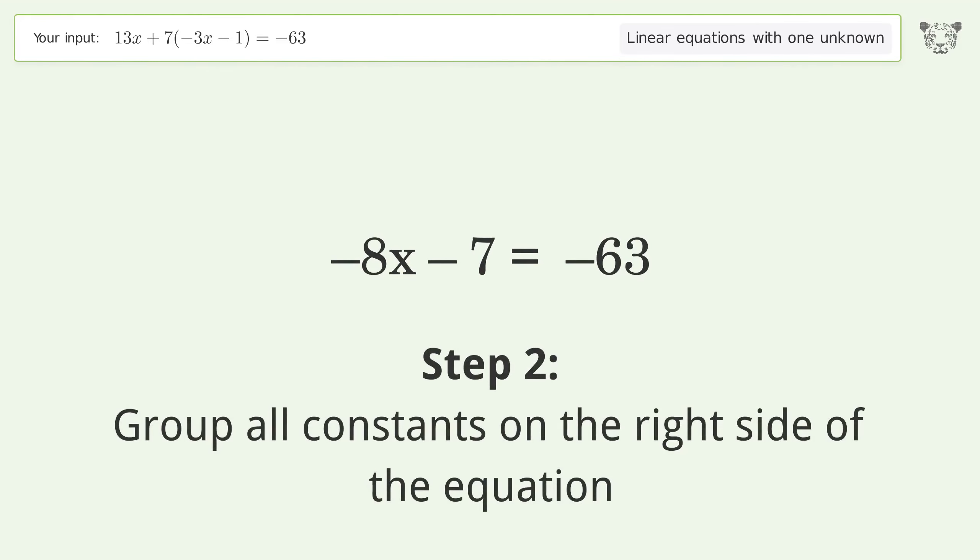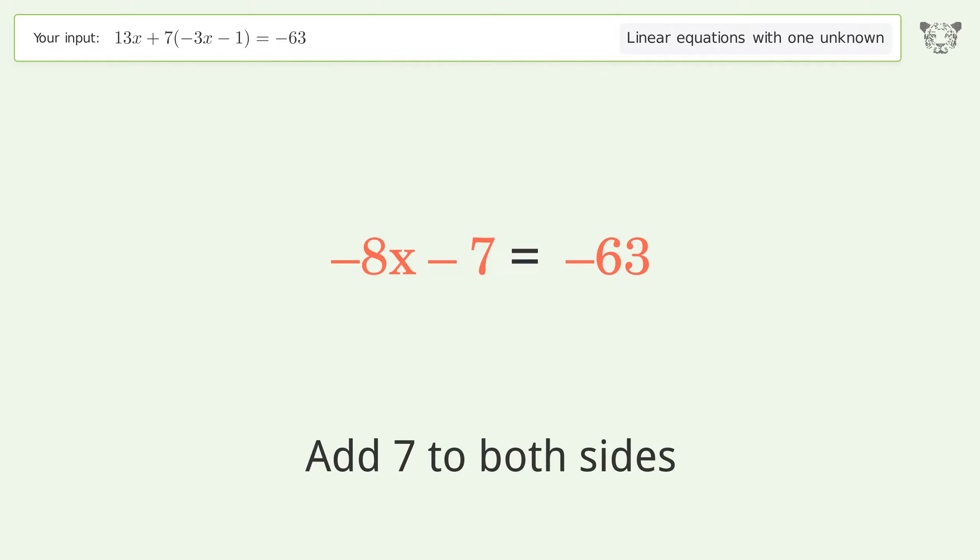Group all constants on the right side of the equation. Add 7 to both sides. Simplify the arithmetic.